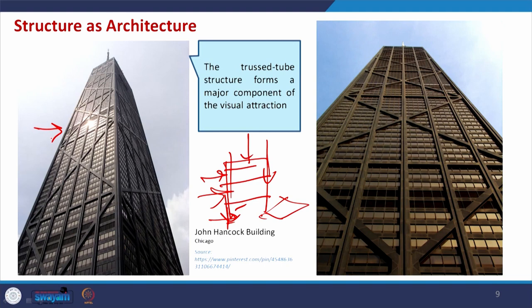In order to protect the building, we must have adequate structural arrangement. Here, if you see the John Hancock Building in Chicago, the truss tube structure forms a major component of its visual attraction. There are vertical members, horizontal members, and very interestingly some cross members — these are the structural arrangement. The cross members are required, and I will discuss in detail why — but here I give you one small example.